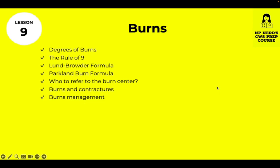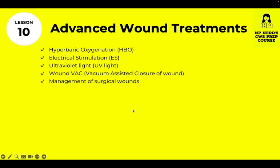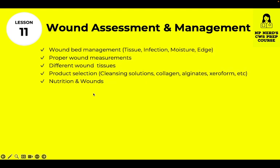Lesson 9 covers burns, including how to use the Lund-Browder formula and the Parkland burn formula — these can be on the test. Lesson 10 covers advanced wound treatments on the test, such as HBO, ES, UV light, and the WoundVac. Lesson 11 covers wound assessment, preparing the wound bed, managing tissue, infection, moisture, and product selection for different wounds.